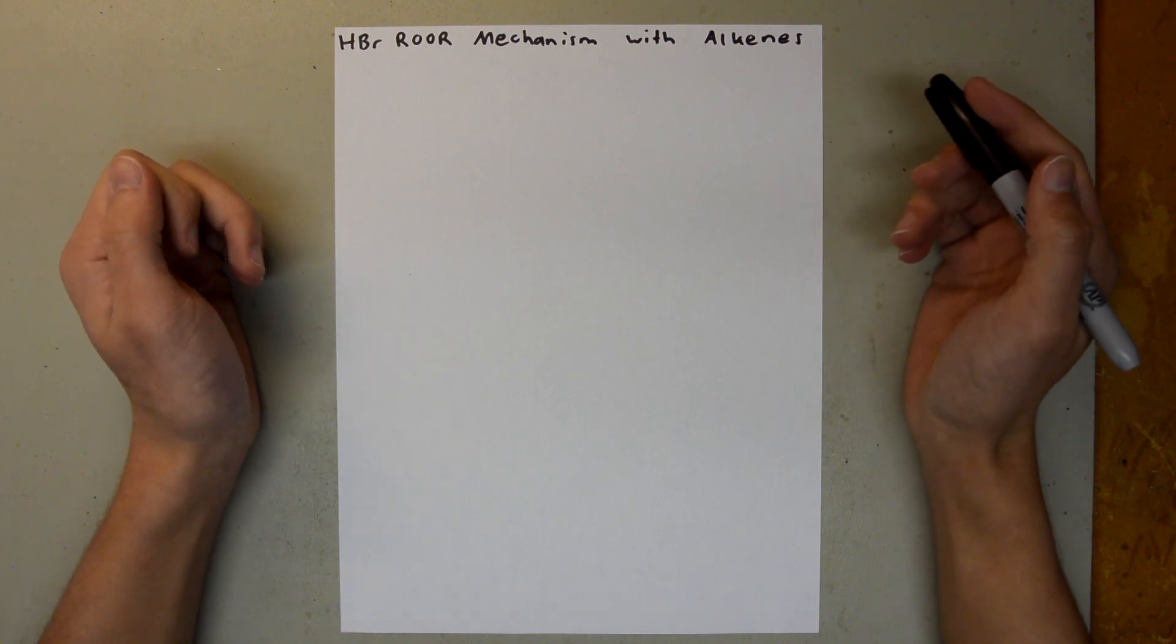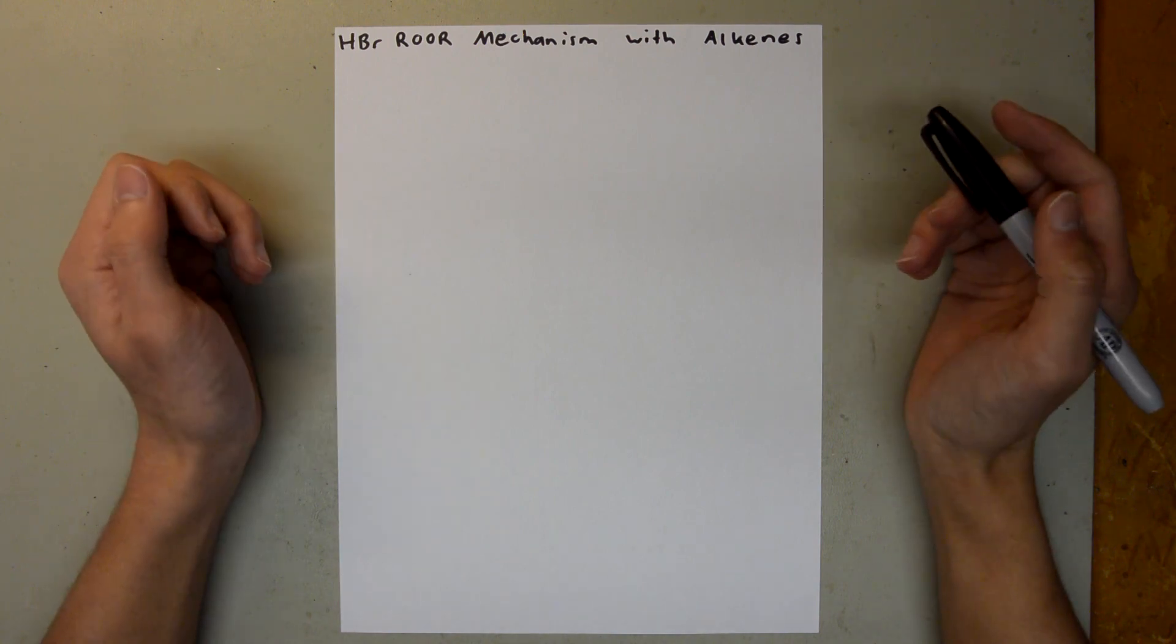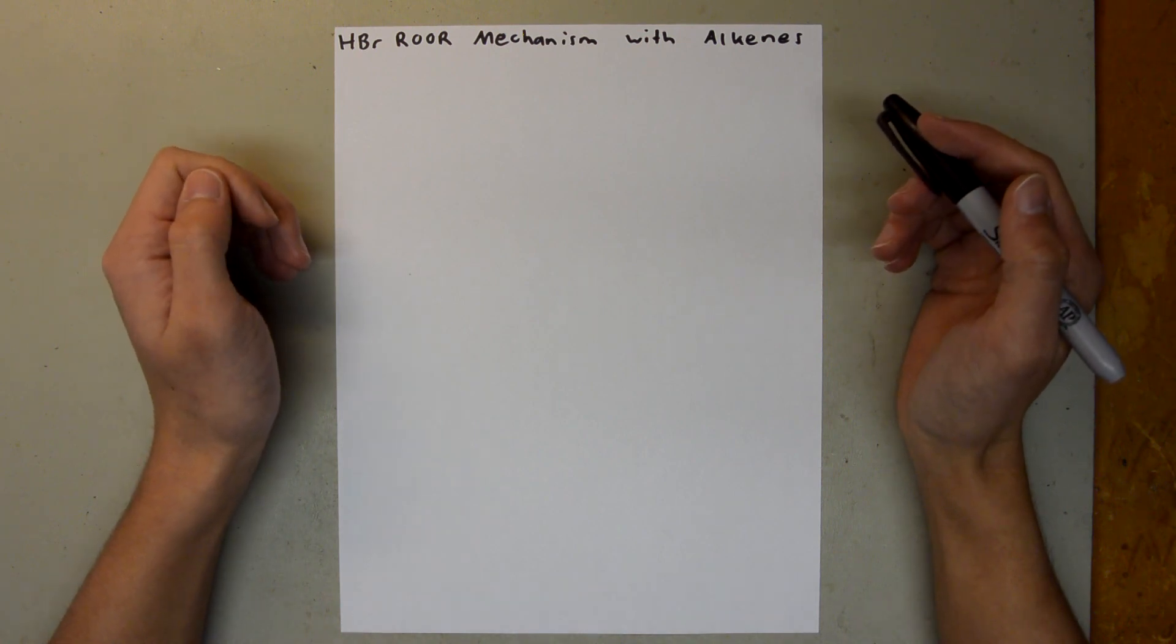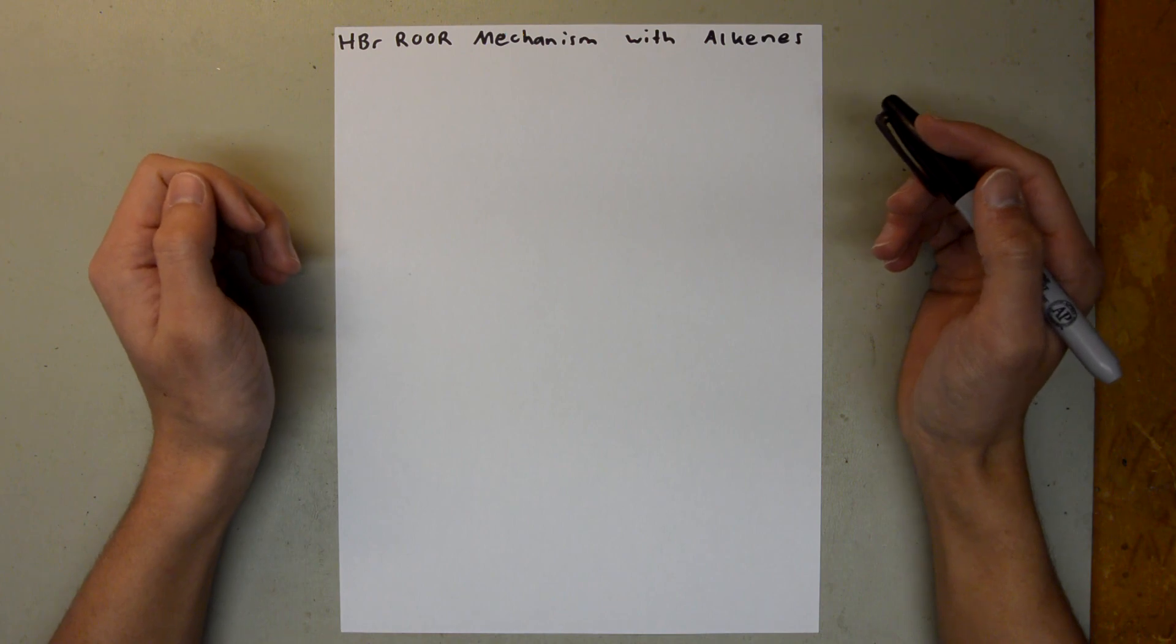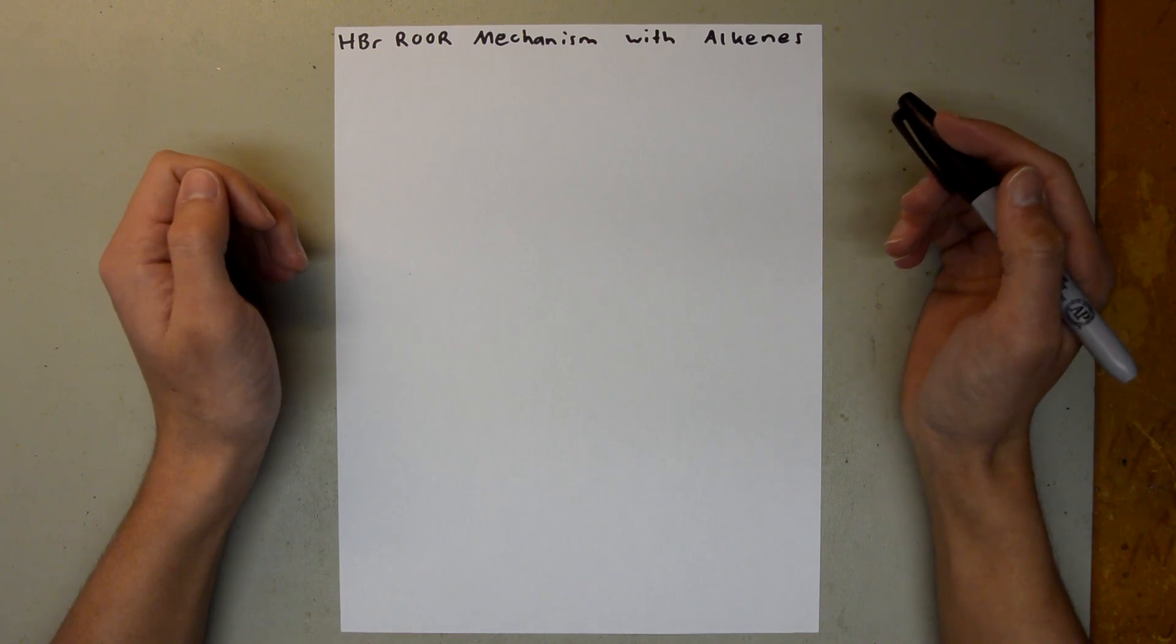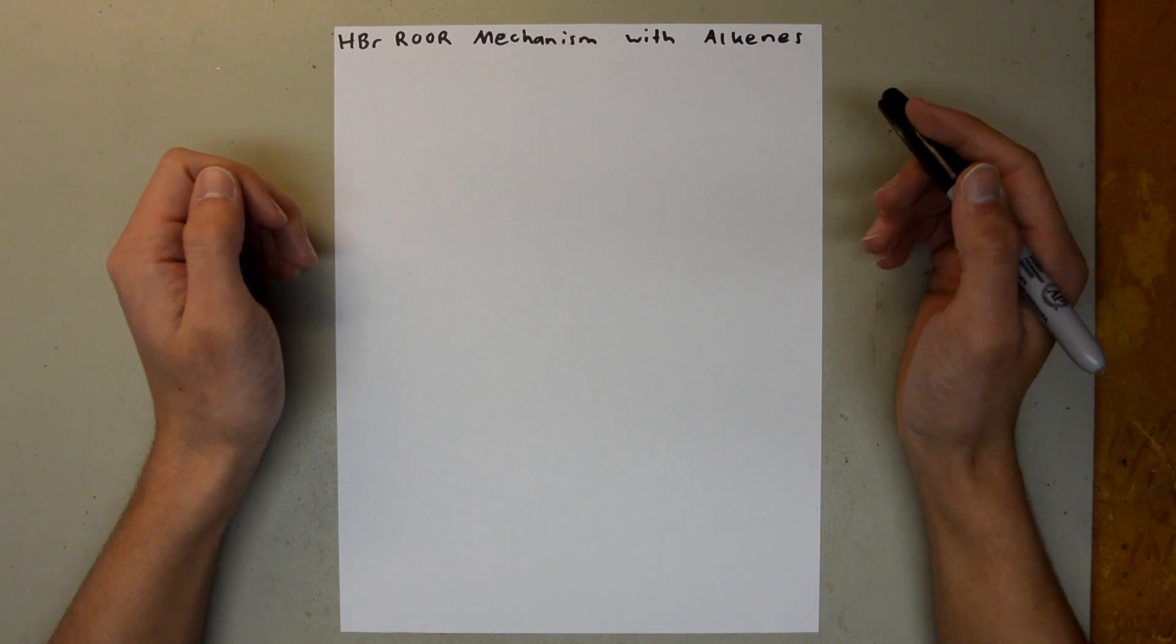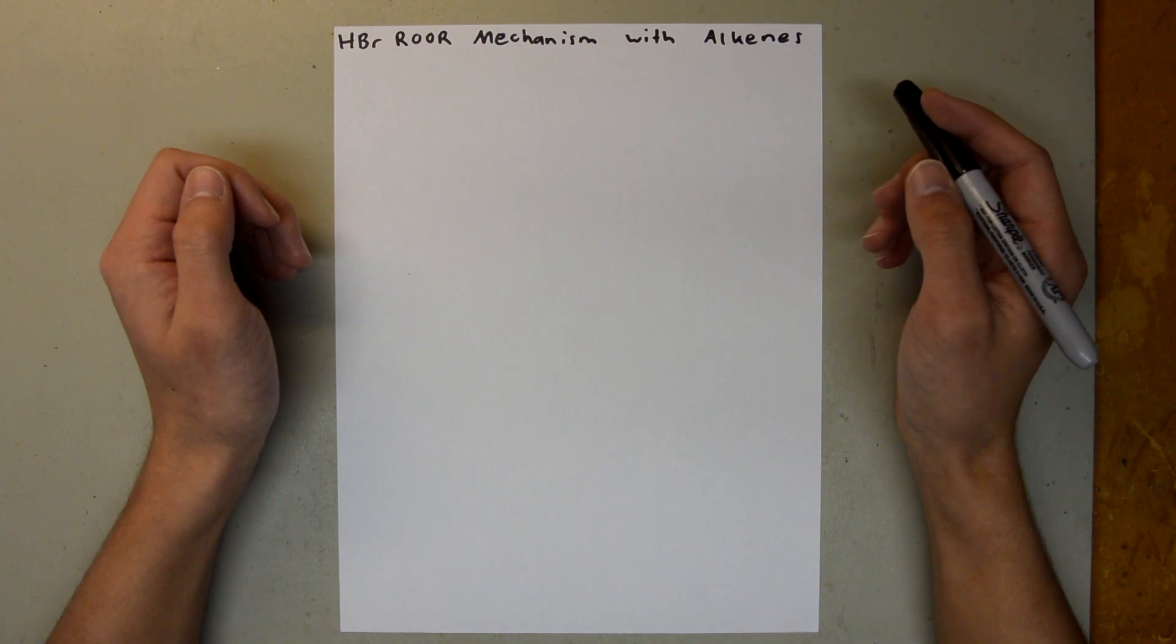Just a couple things I want to go over before I actually start. I will only be showing the major products for each reaction. So some reactions will have more products than I draw, but I'm just going to draw the products that are important for the continuation of the mechanism. In addition, I will be using the arrow pushing method to show the movement of electrons, and in this particular mechanism, it'll be a radical mechanism.